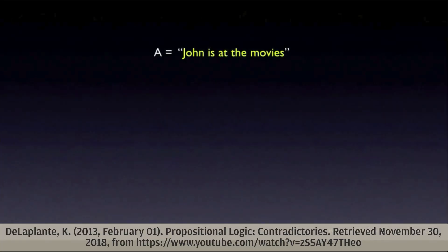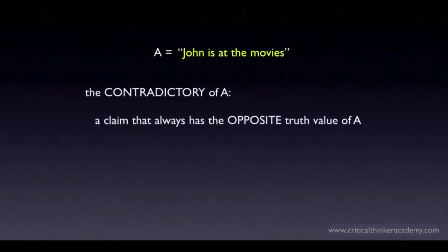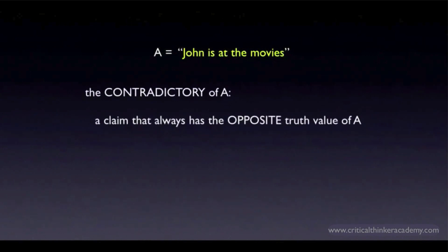Let A be the claim 'John is at the movies.' The contradictory of A is defined as a claim that always has the opposite truth value of A. So whenever A is true, the contradictory of A is false, and whenever A is false, the contradictory of A is true.